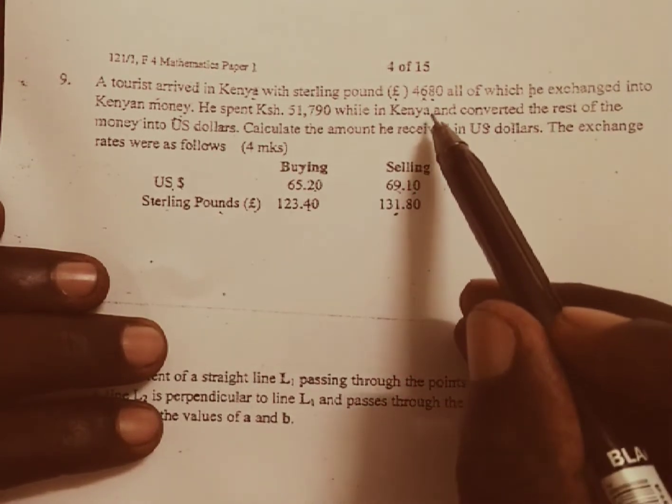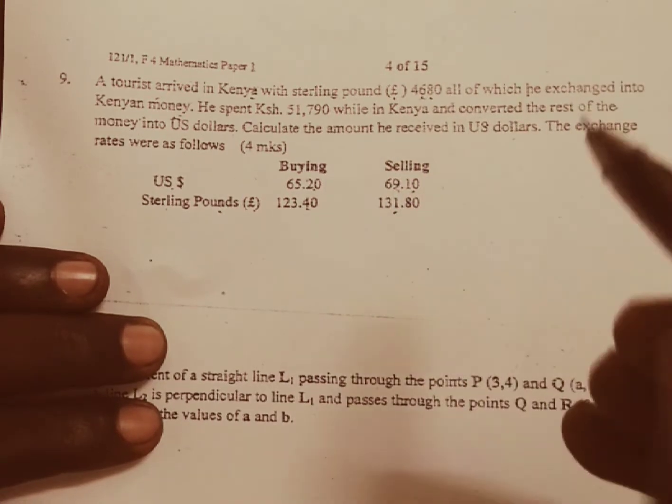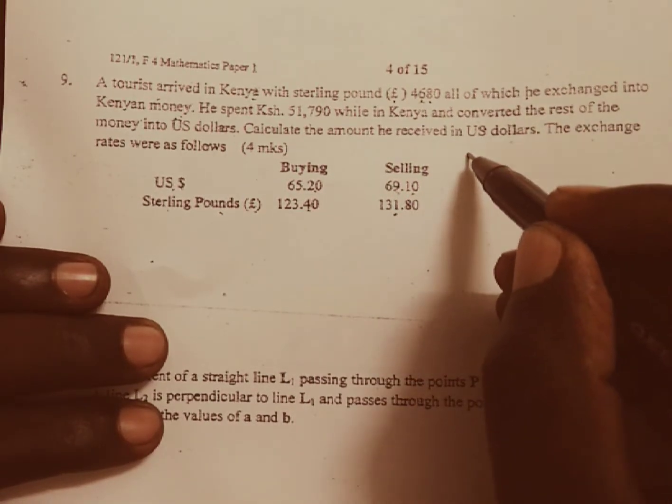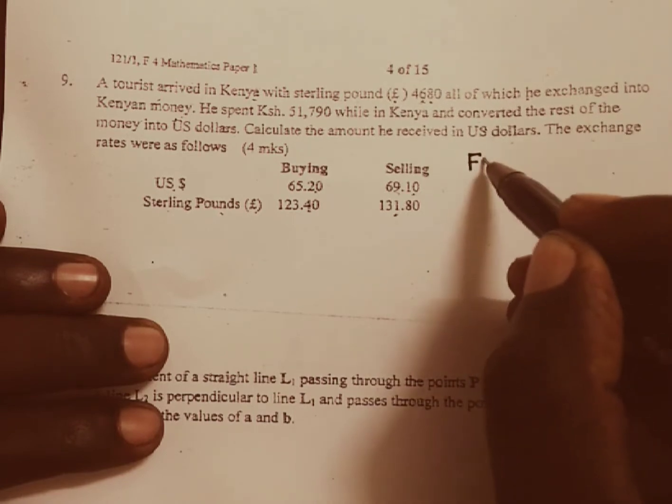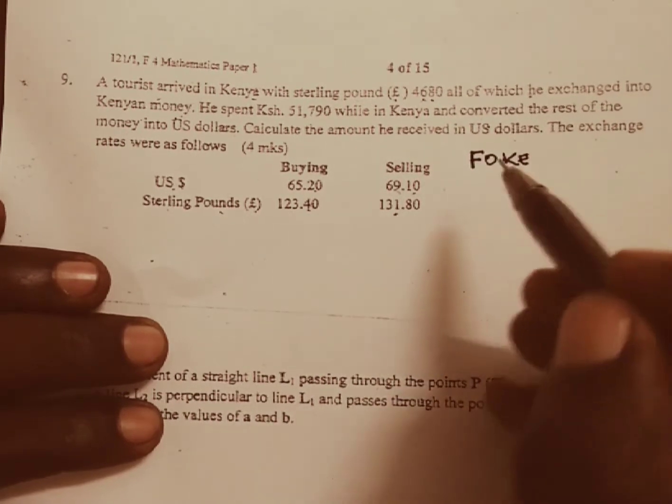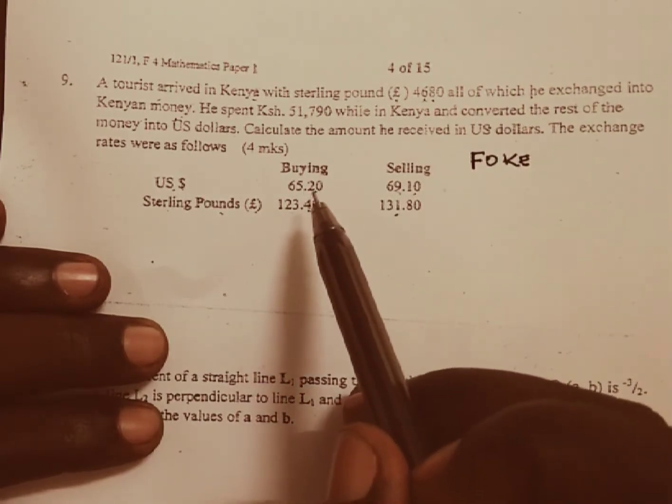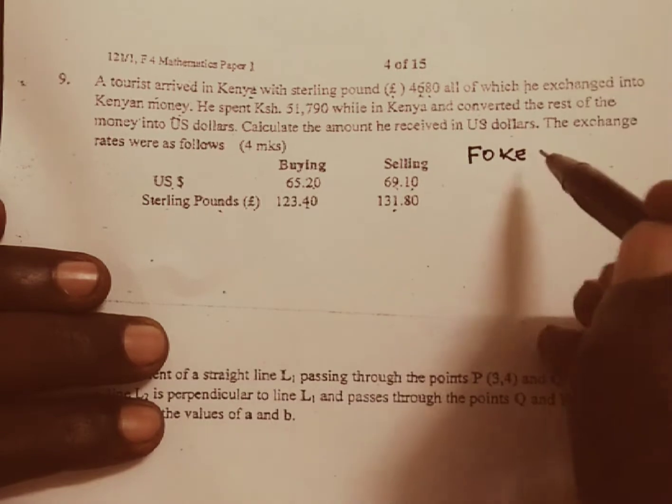When doing this question here you need to know the direction of movement. If somebody comes from their own country, that is foreign coming to Kenya, they will come with their foreign currency, they go and sell to the bank and the bank will buy.